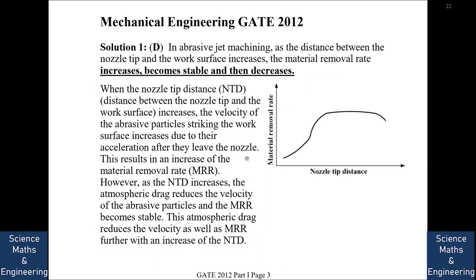However, as we increase the nozzle tip distance further, the atmospheric drag starts to reduce the velocity of the abrasive particles, so the material removal rate becomes stable and then decreases as we increase the nozzle tip distance too far. The graph initially increases, then becomes stable, and then decreases.